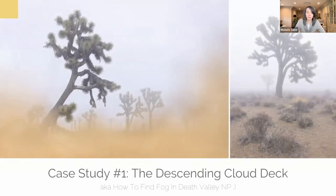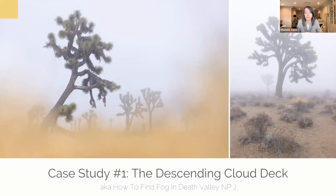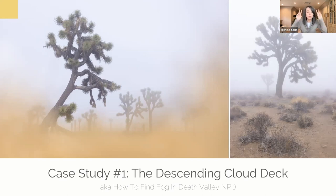In this section, we're going to employ three different case studies to teach these concepts in real-life situations. Case study number one is the descending cloud deck — the situation I alluded to with the fog hack earlier. I'm also calling this case study 'How to Find Fog in Death Valley National Park.'